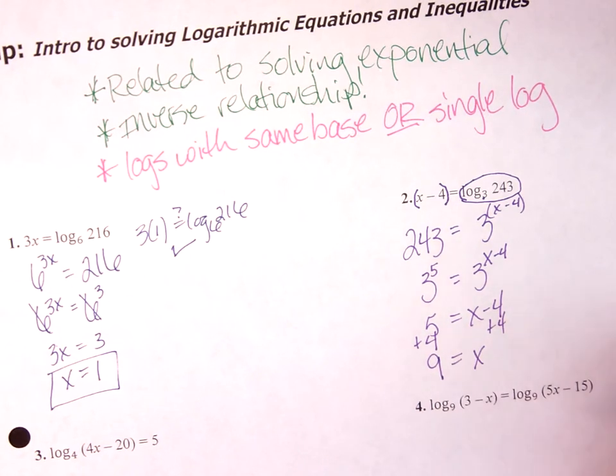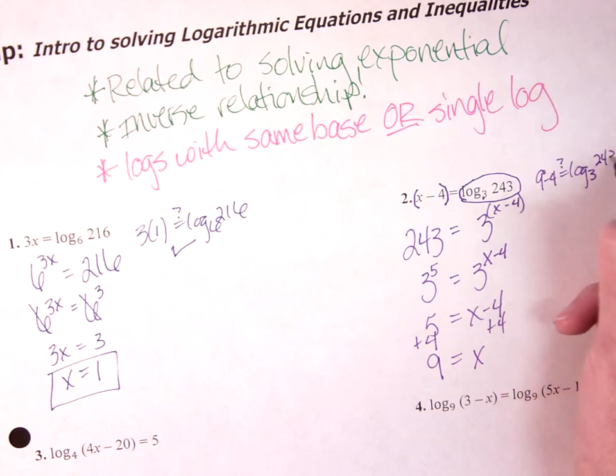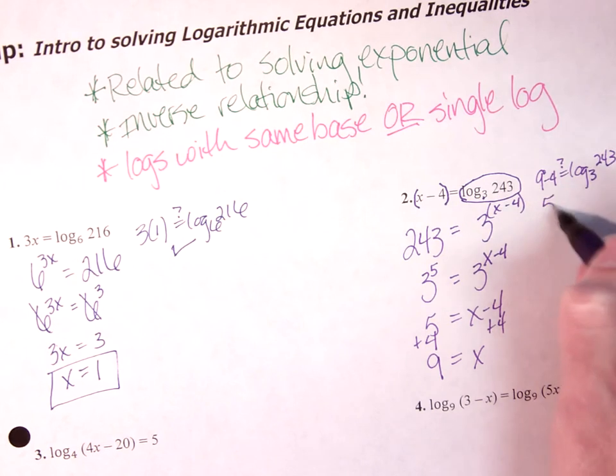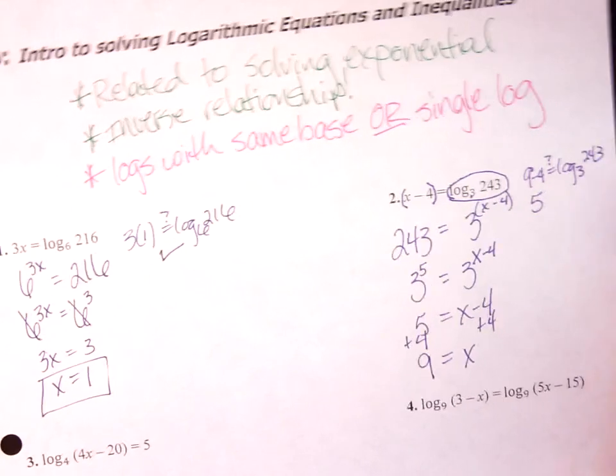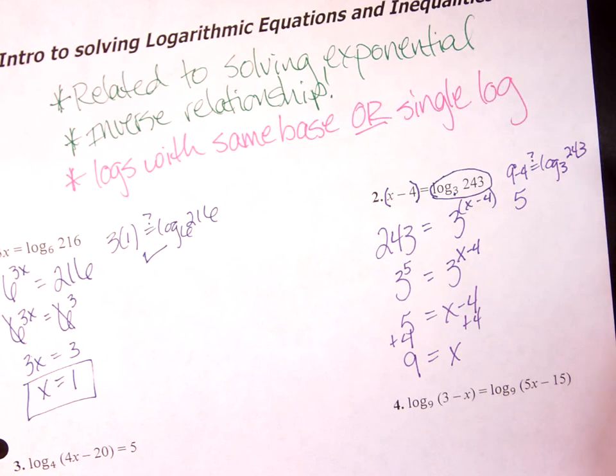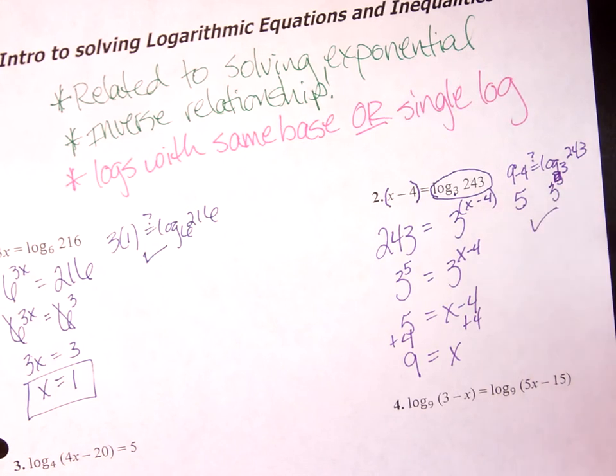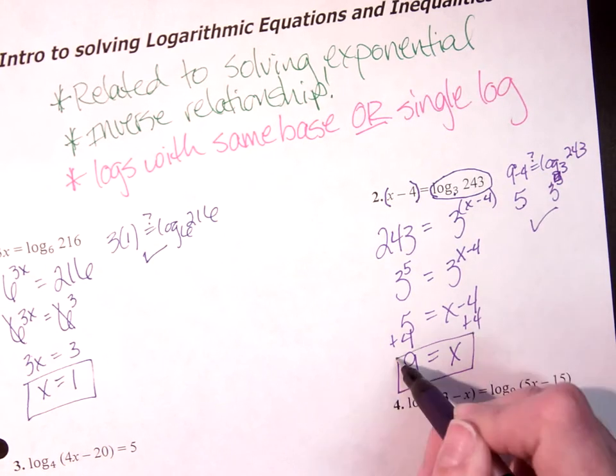So we're going to go back and check. Is 9 minus 4 equal to log base 3 of 243? 9 minus 4 is 5, and remember from our work with logs the other day, 3 to what power equals 243? 3 to the 5th, that's what we had here, we're good, x equals 9.